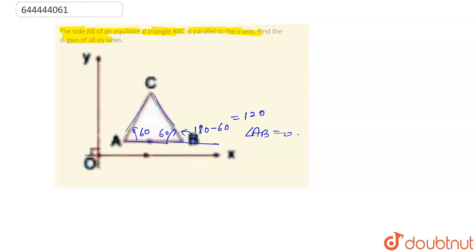So from here we can calculate slope of each lines, that is slope of line AB. Slope of line AB is equal to tan, angle made by AB is 0, so tan 0 is equal to 0. So M AB is equal to 0.